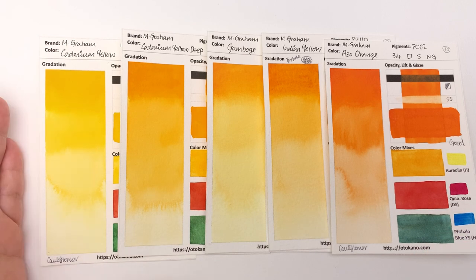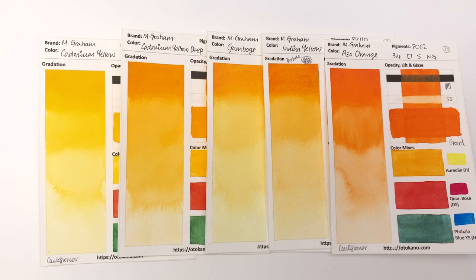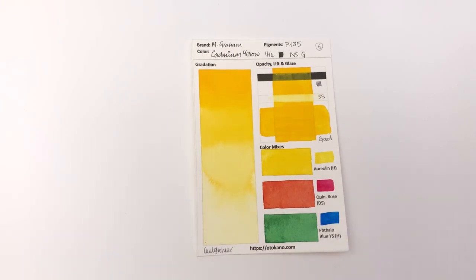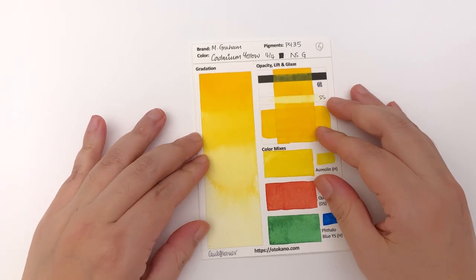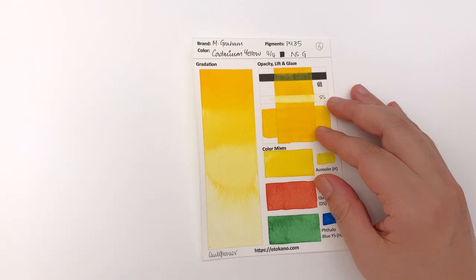We have the cadmium yellow, cadmium yellow deep, gamboge, indian yellow and azo orange in this episode. So let's start off with the cadmium yellows. This is the cadmium yellow. It's a very warm orangey yellow kind of color and it is very intense because it's a cadmium. It's going to be nice and intense.